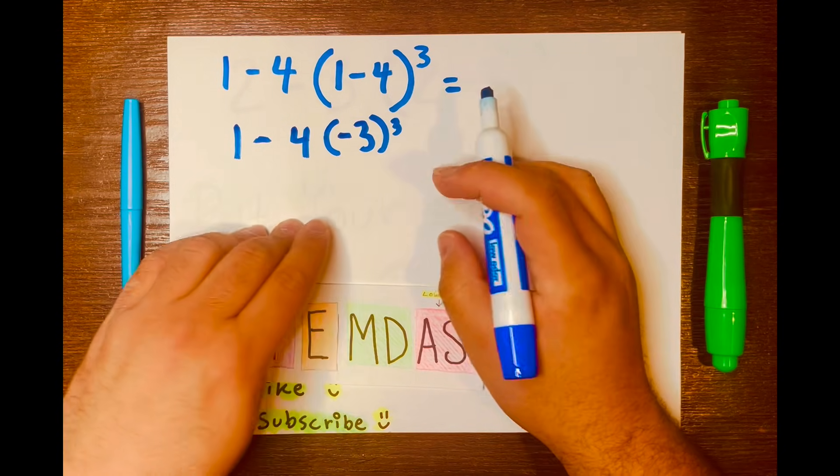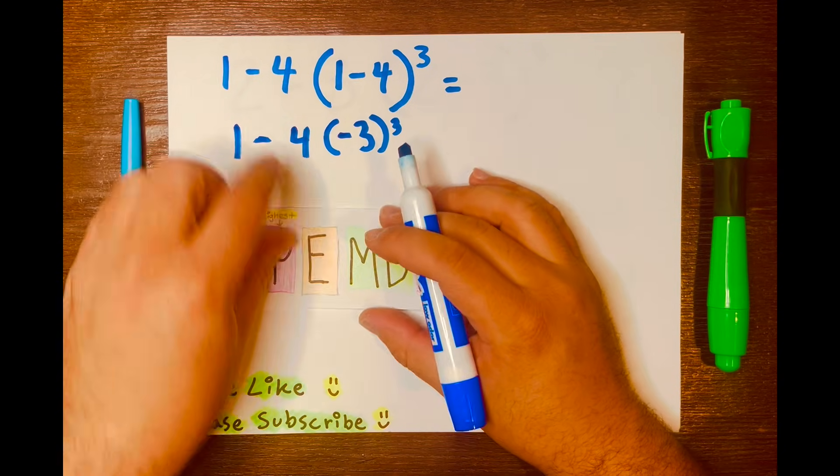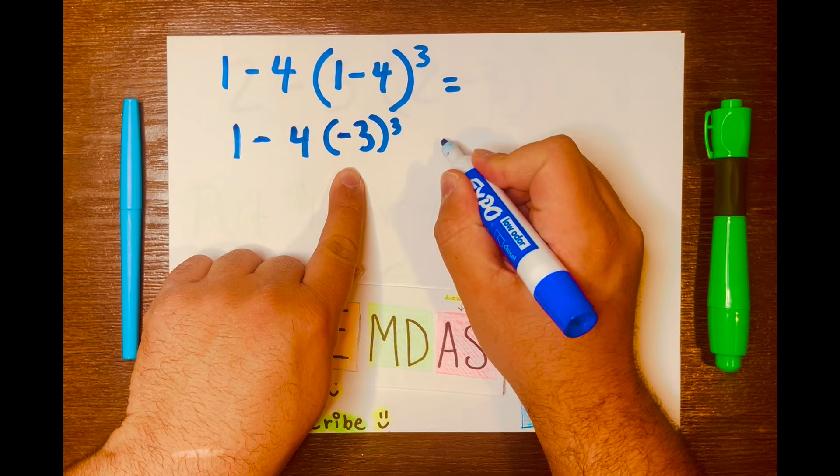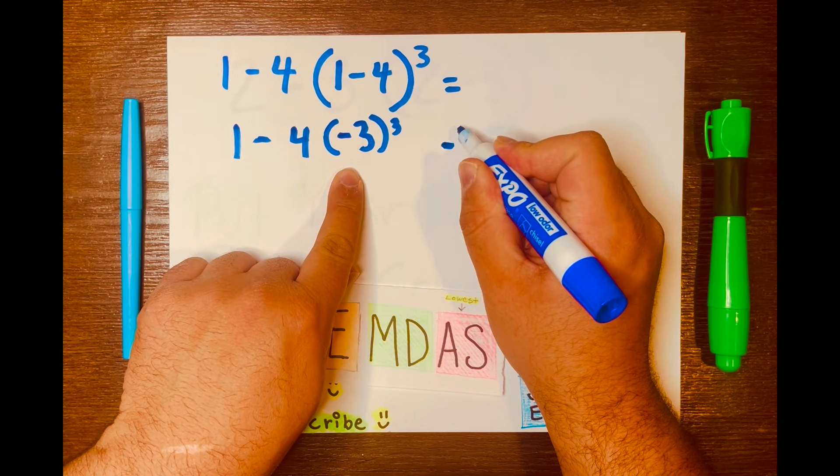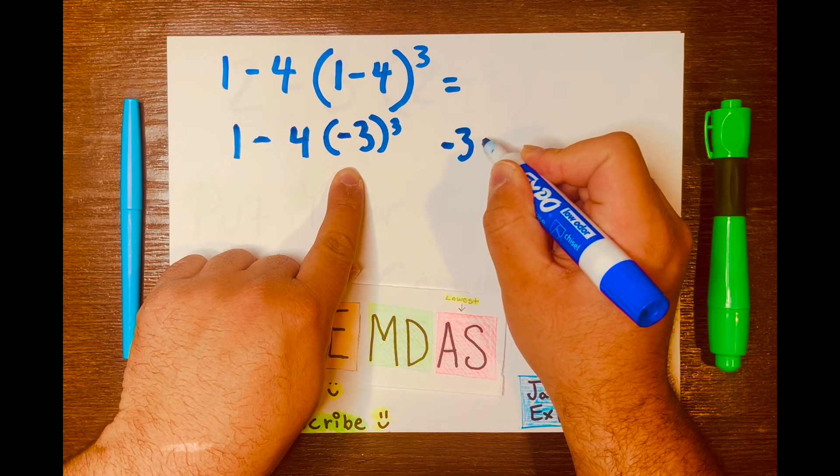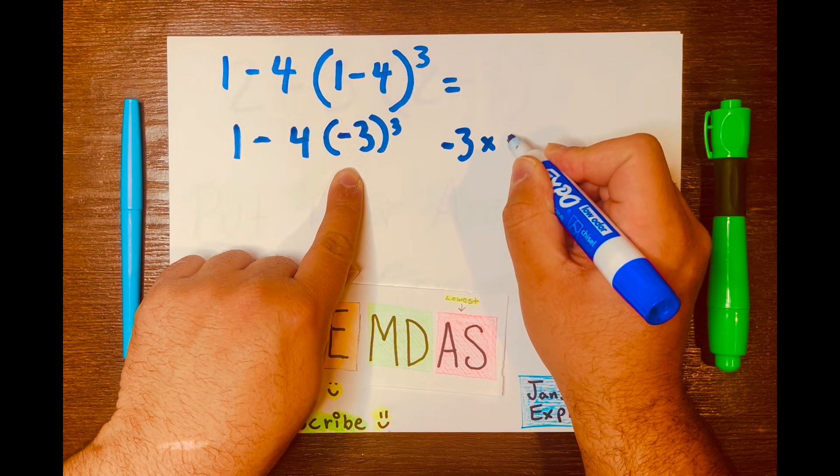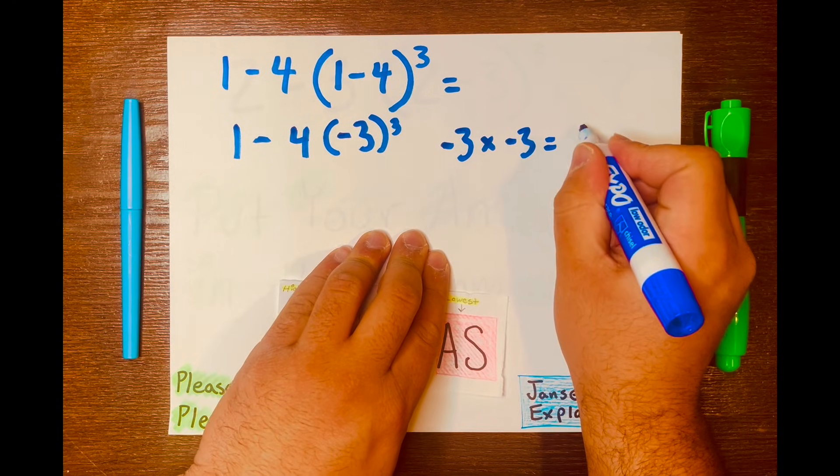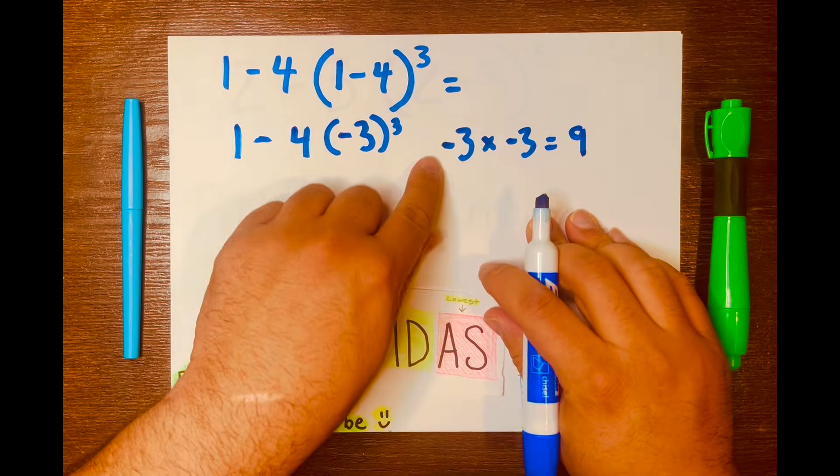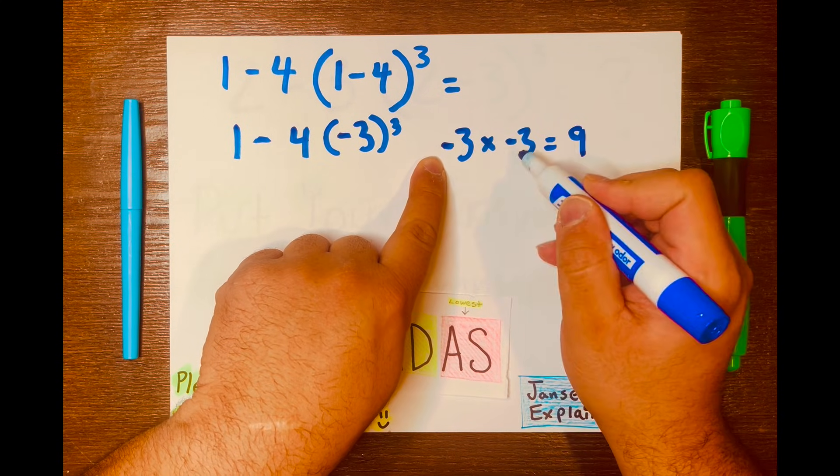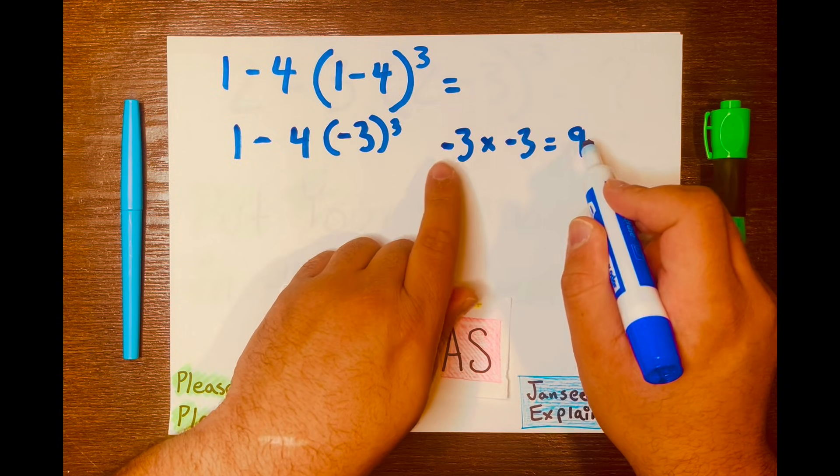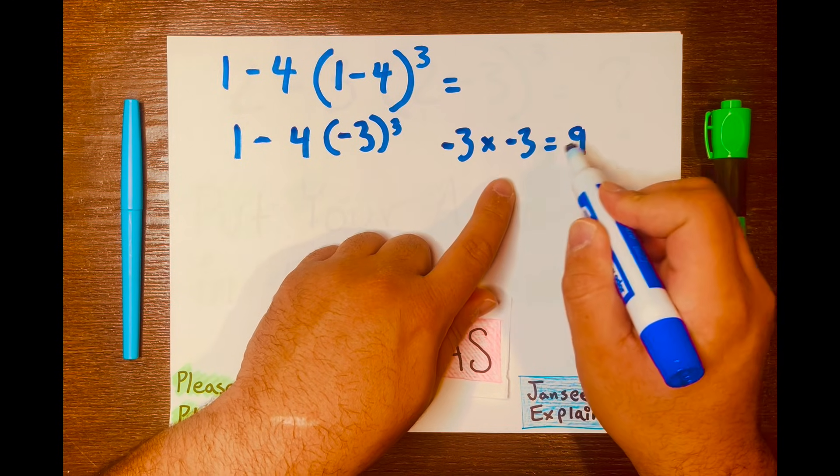Now we have to solve the exponent. So we'll solve it here. Negative 3 times negative 3 equals 9. And we know that a negative times a negative gives you a positive. So negative 3 times negative 3 equals 9.